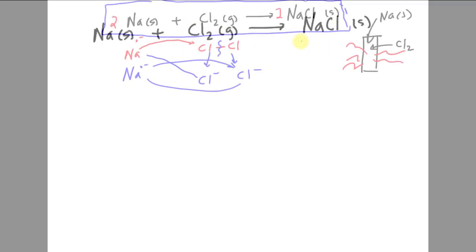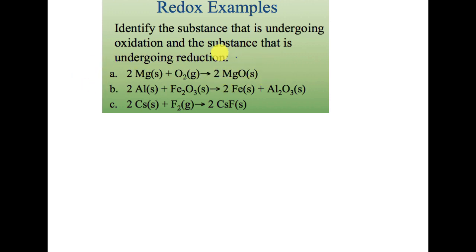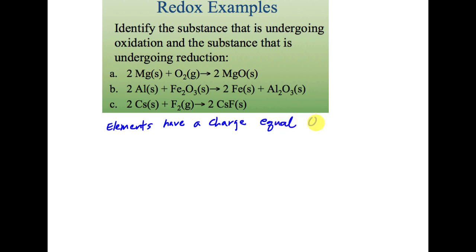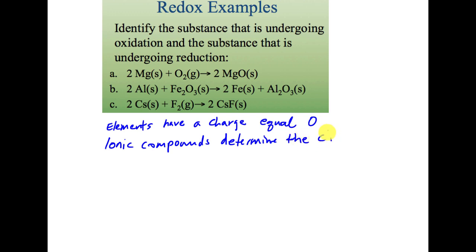To identify oxidation and reduction from a balanced equation, remember: all elements in their elemental state have a charge equal to zero. For ionic compounds, determine the charge based on the ions — just as we did in the last chapter.